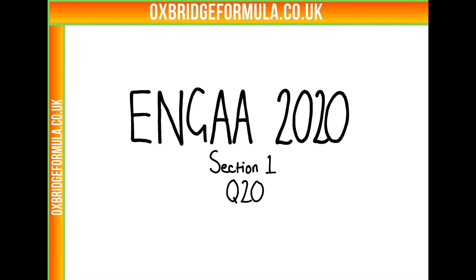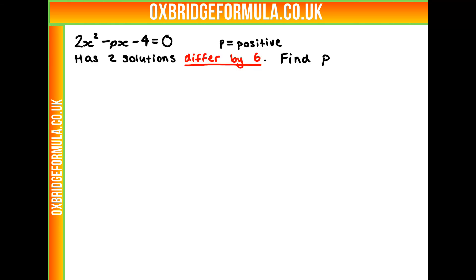In this video, we'll be looking at Enger 2020, section 1, question 20. We've got a quadratic equation here: 2x squared minus px minus 4 equals 0. We know that p is positive, and that this equation has two solutions that differ by 6, and we're asked to find p.